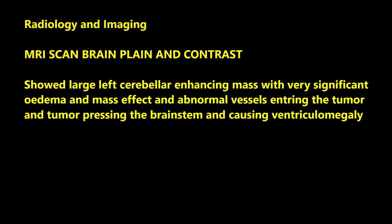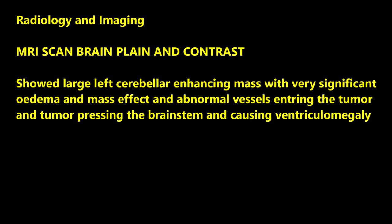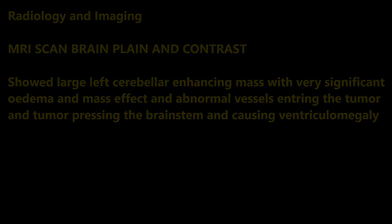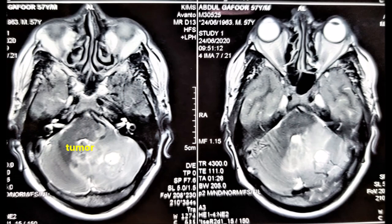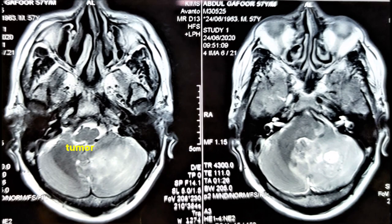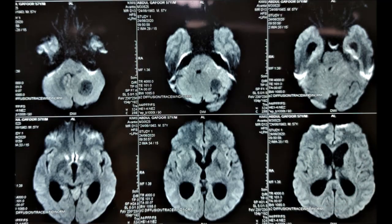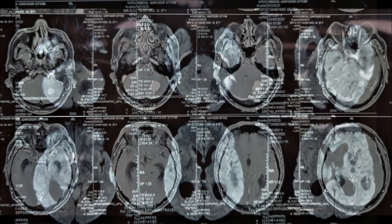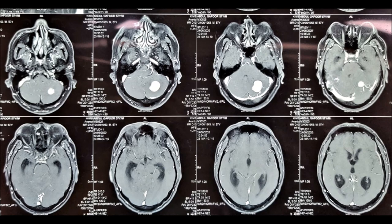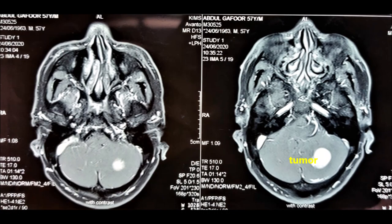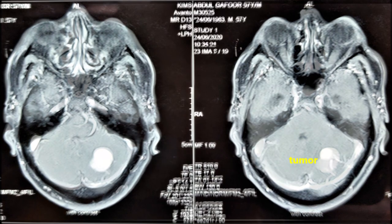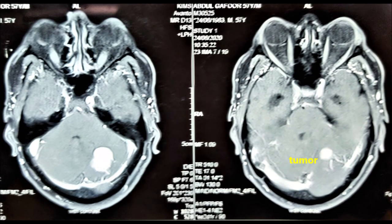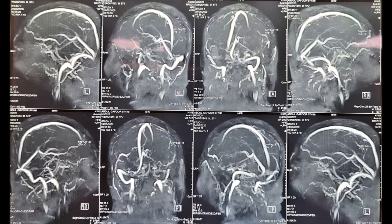He was investigated with contrast MRI brain, which showed a large left cerebellar brilliantly enhancing mass with very significant edema and swelling of the left cerebellum, significant pressure on the cerebellum and brainstem with ventriculomegaly. There was evidence of extensive vessels supplying the tumor from the periphery, as shown in the contrast MRI and MRI angiogram.